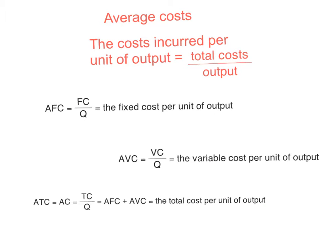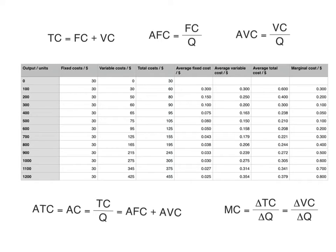In the previous video I distinguished between total costs, average costs, and marginal costs, and introduced those three concepts and we saw what they looked like as diagrams. We had a look at the concept of average fixed cost, average variable cost, and average total cost. I also introduced the concept of marginal cost and we had a look at how to calculate each of these from a set of data.